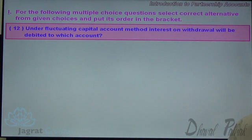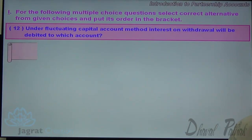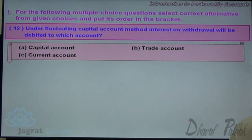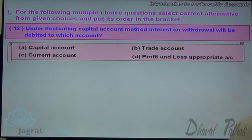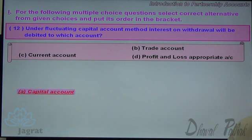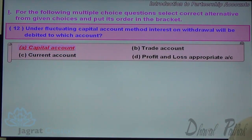Next. Under the fluctuating capital account method, interest on withdrawals will be debited to which account? Under the fluctuating capital account method there is only one capital account for each partner, so the amount is debited to the capital account.